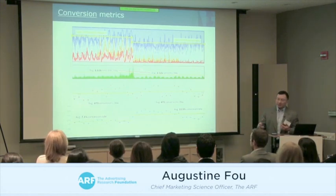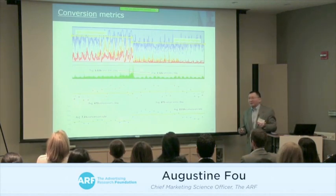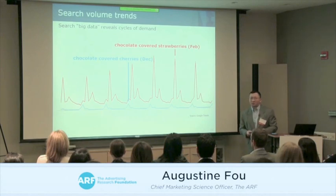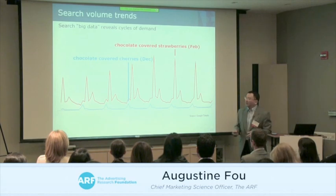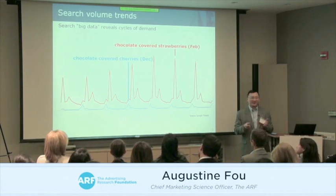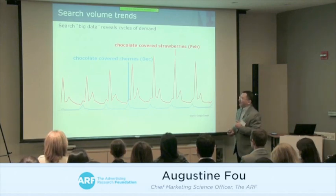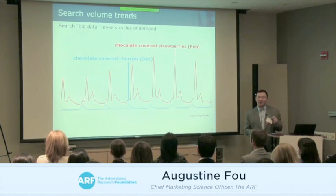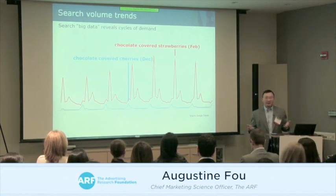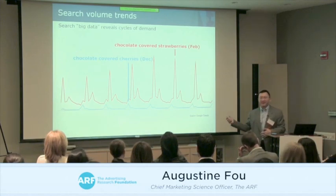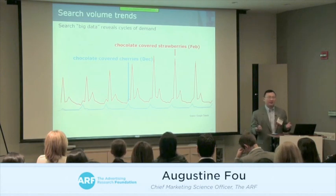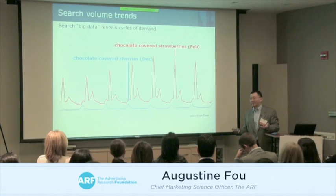What if we go beyond those three? This chart from Google Trends shows red peaks every February for 'chocolate covered strawberries' — obviously Valentine's Day — and blue peaks every December for 'chocolate covered cherries' for Christmas. If you're Godiva, you can use this data to inform your demand planning. This is big data — millions of searches that Google publishes for free.